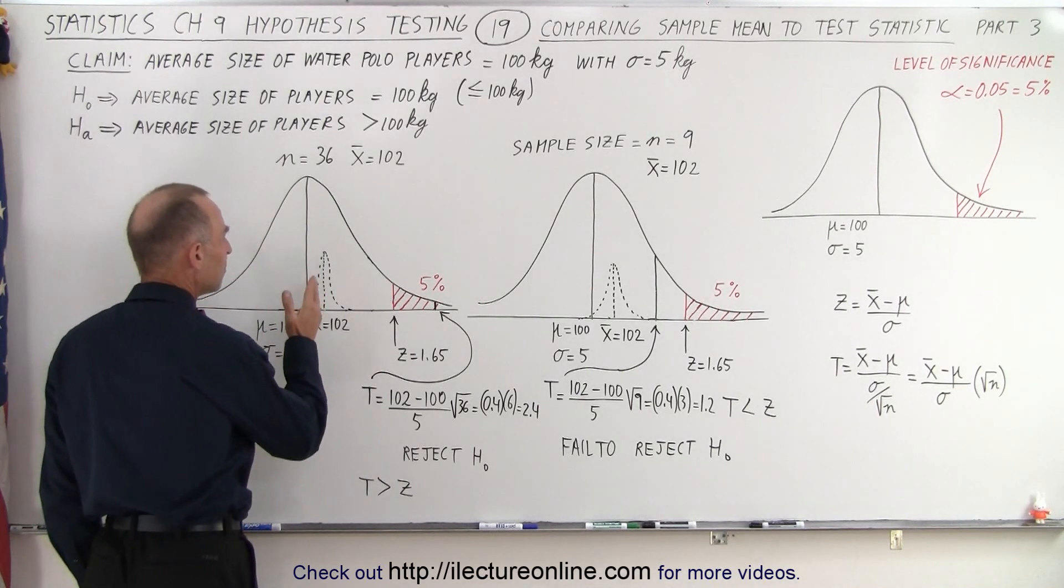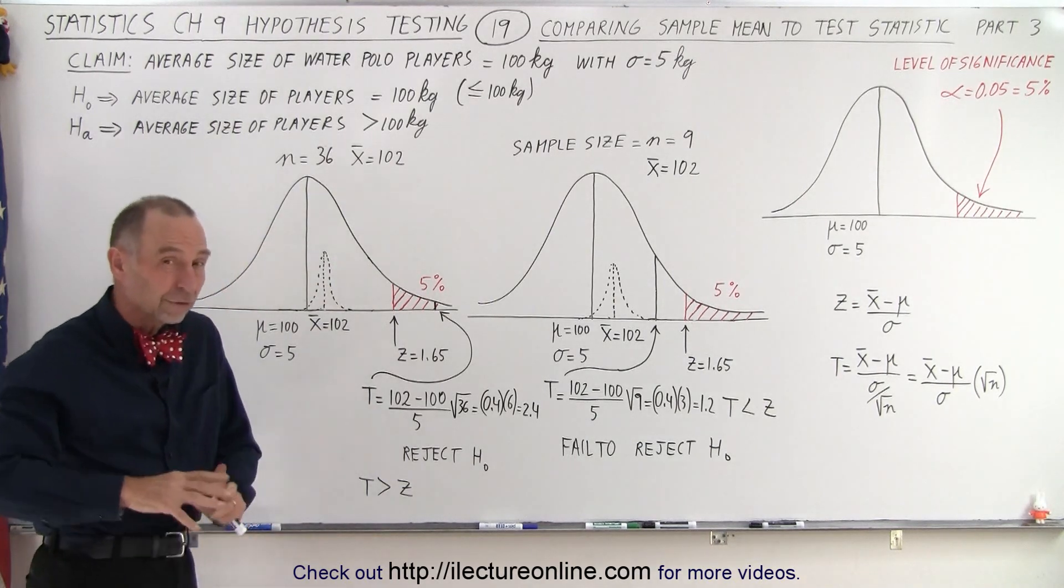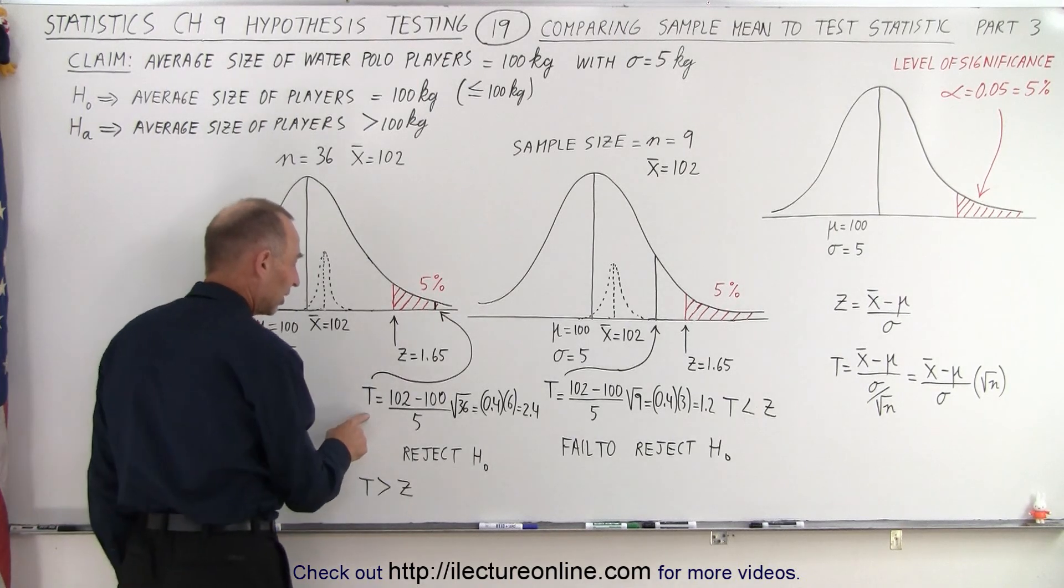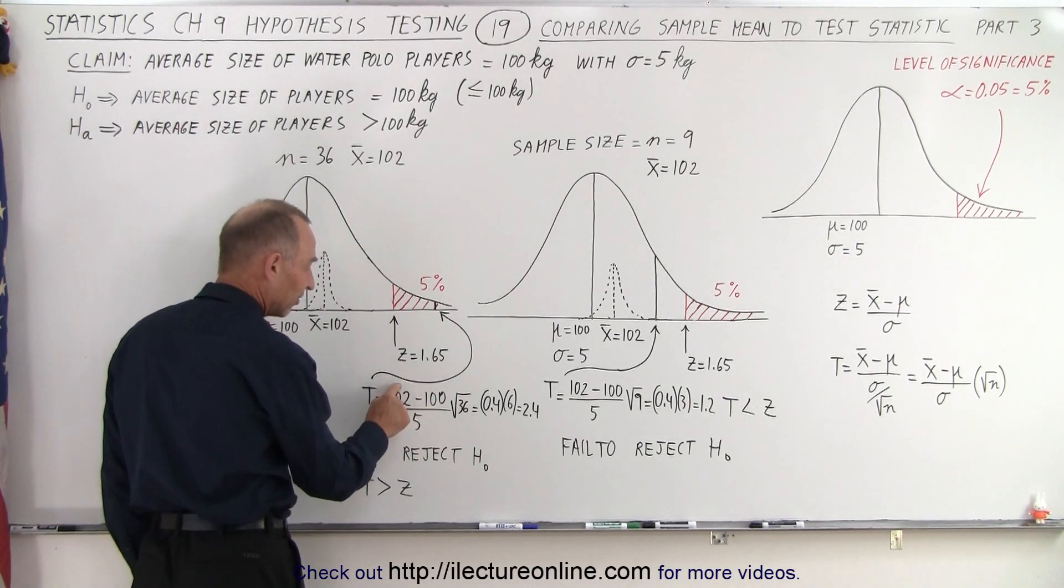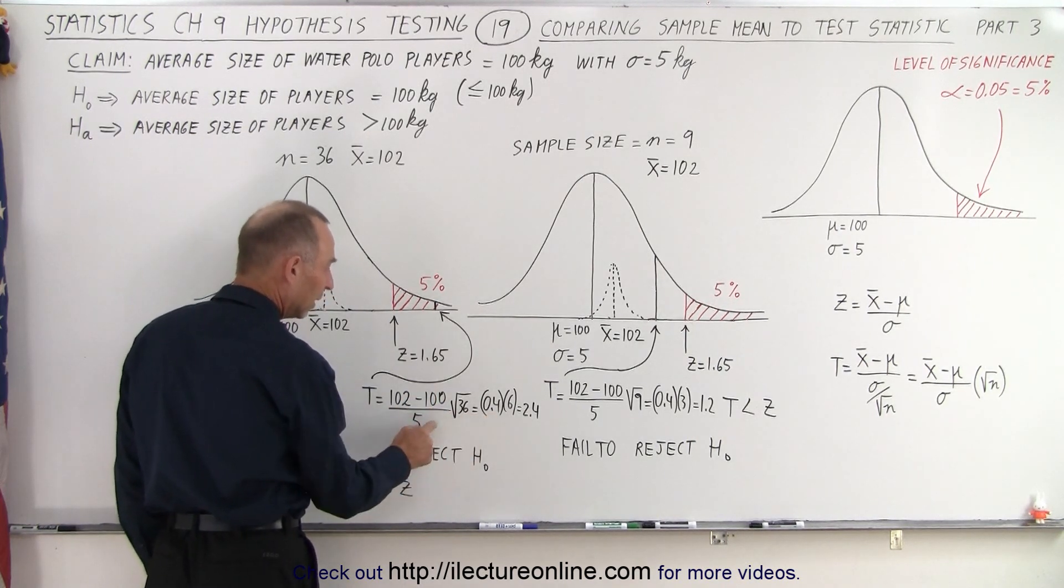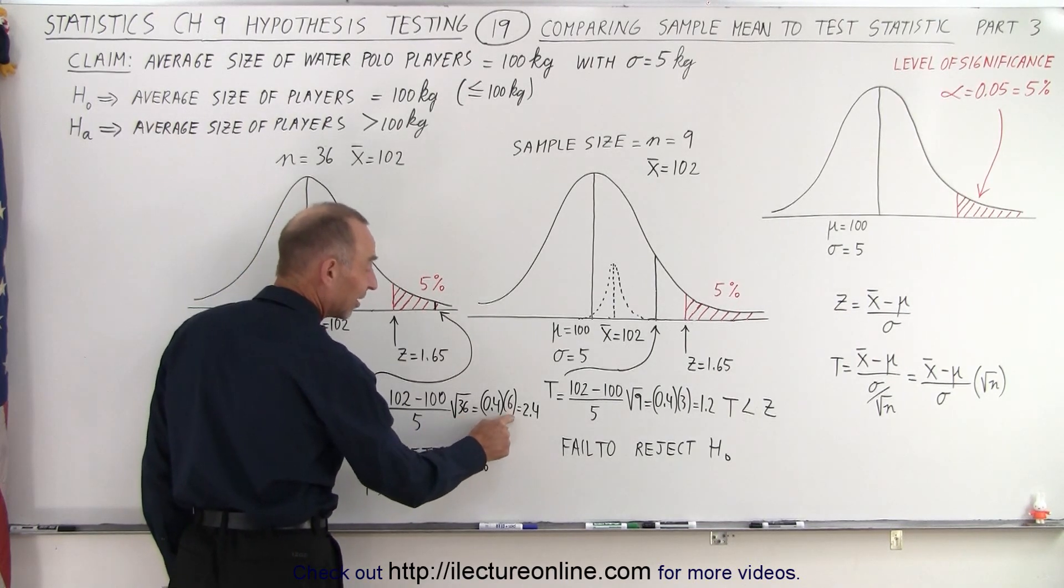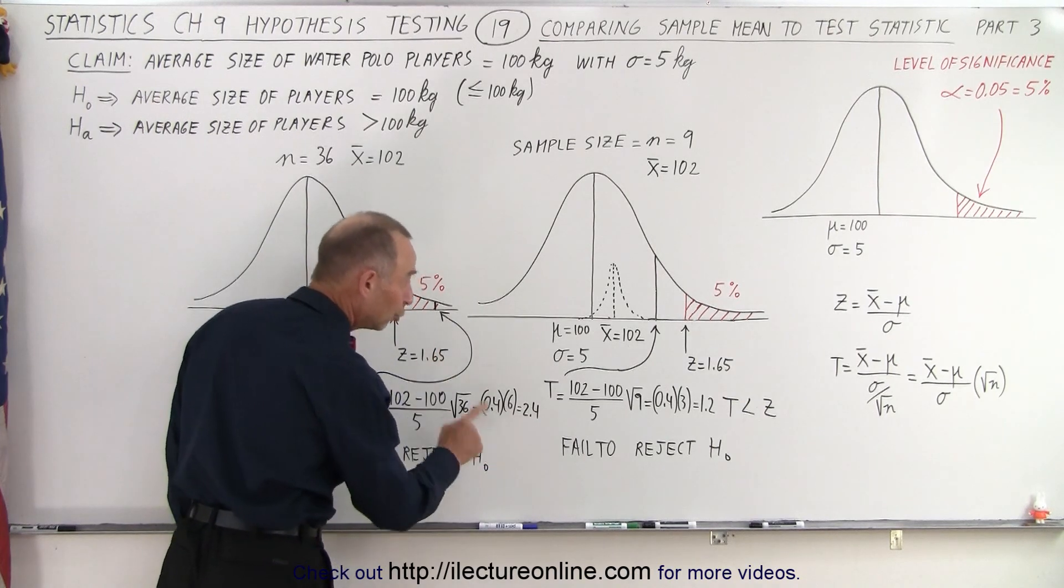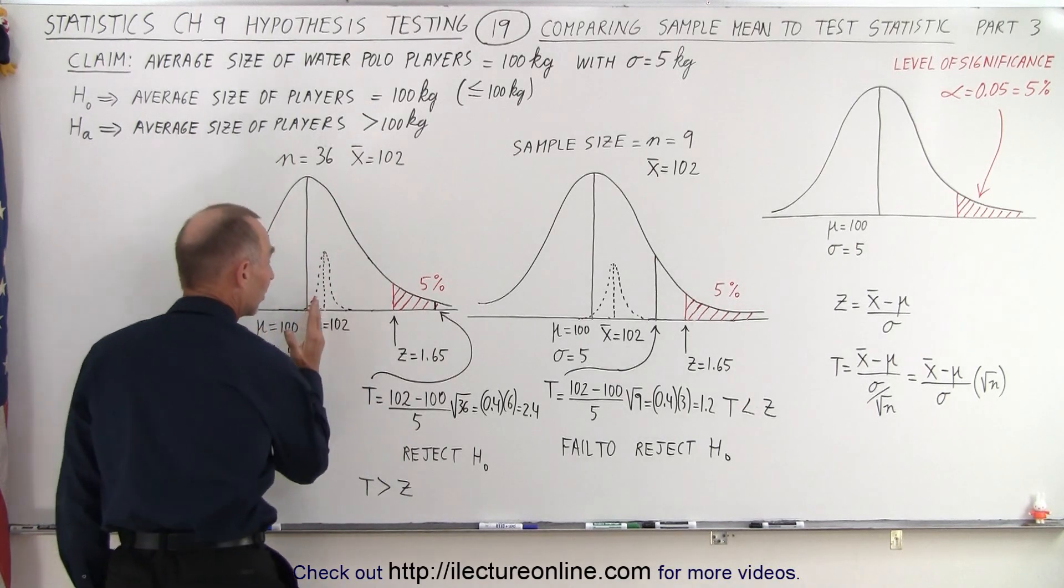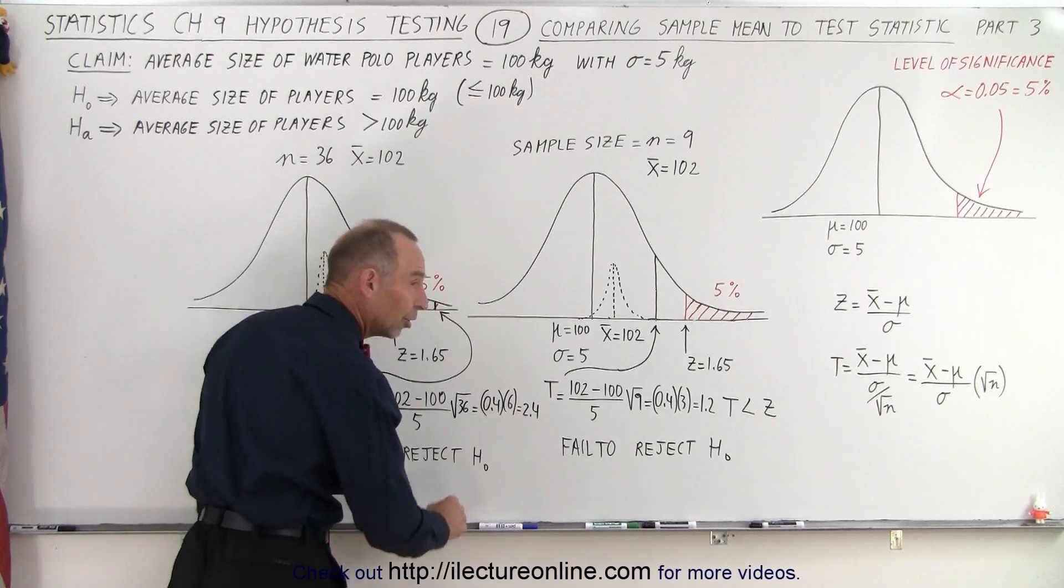So what happens when the mean of the sample is 102, but the sample size is now 36? We made it 4 times as large from 9 to 36. Notice that the test statistic can be calculated by taking the difference between the mean of the sample and the mean of the population divided by the standard deviation, which again is 0.4, and then multiply times the square root of the sample size. The square root of 36 is 6. 6 times 0.4 is 2.4, and now 2.4 is bigger than the z-score, which means that now the test statistic moves into the critical region, and therefore we can reject the null hypothesis.